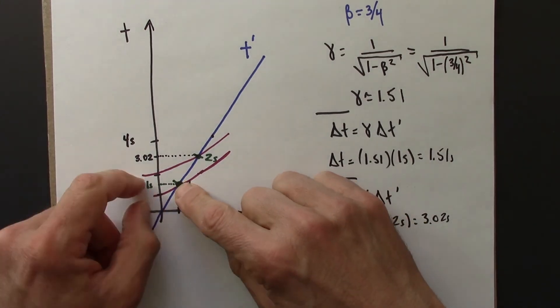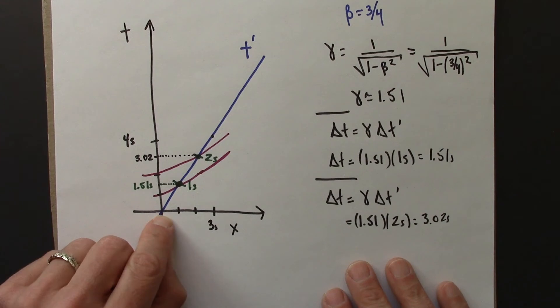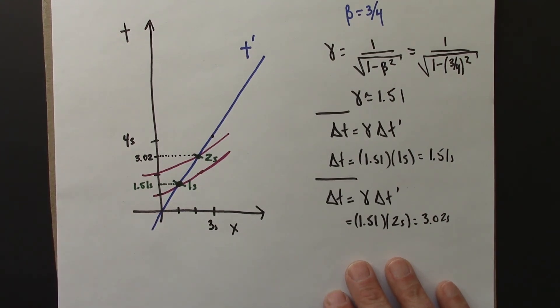So we've seen how to think about the t prime axis, and what we're going to do in the next couple of videos is think about the x prime axis. And we'll have to think a little bit about what the x axis even means, and then once we figure that out, we'll go through a calibration exercise similar to this, and we'll have our 2-observer diagram.